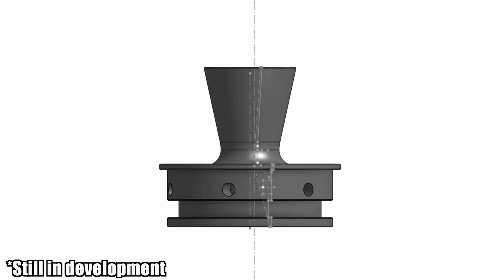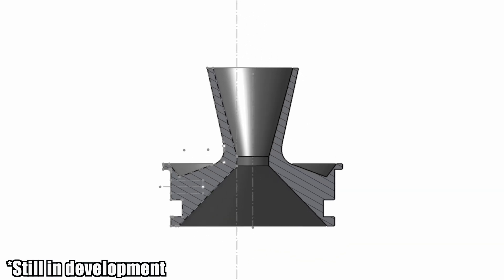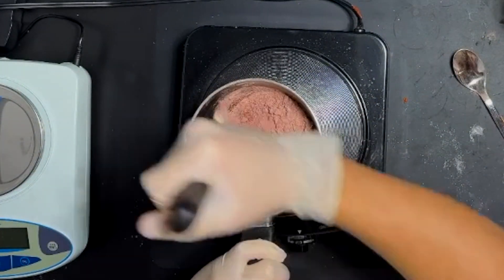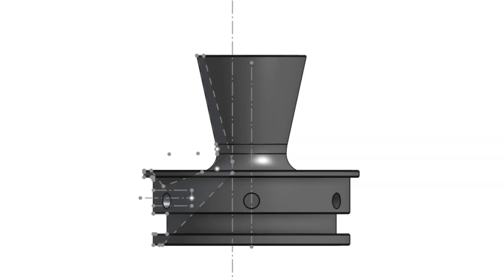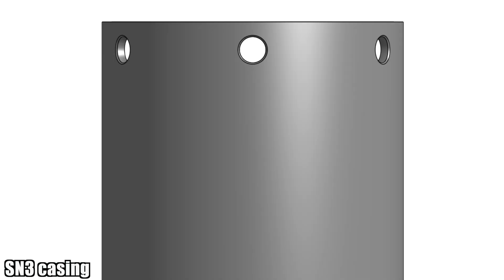SN4 will have a modified version of SN3's nozzle. This motor will also have slightly less propellant because it will be flying next year. The main improvement will be positioning the bolt holes further away from the edge of the casing to prevent tear out.